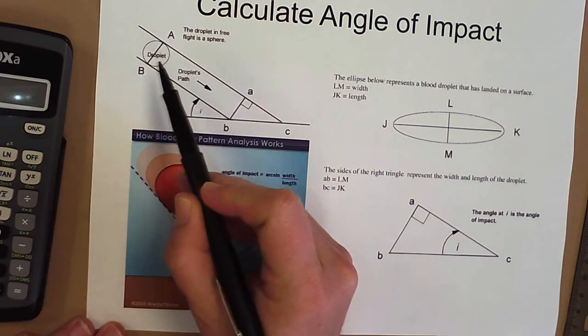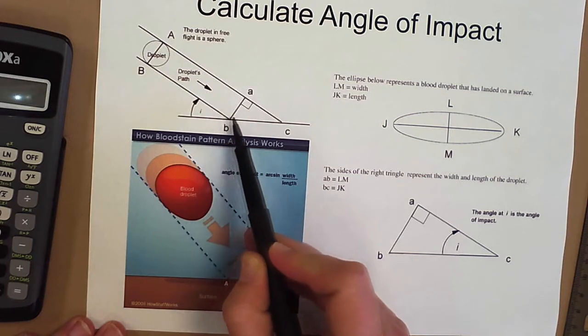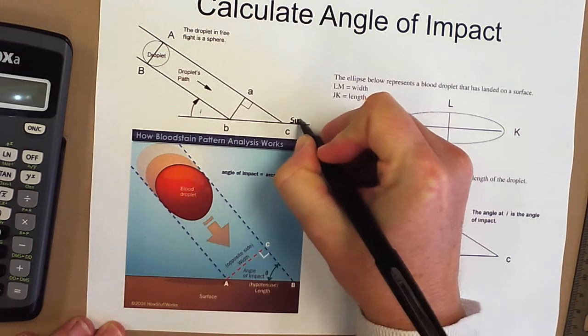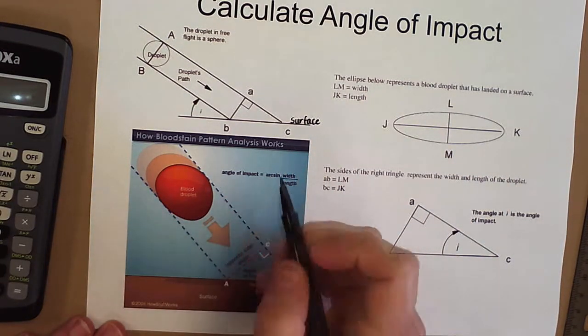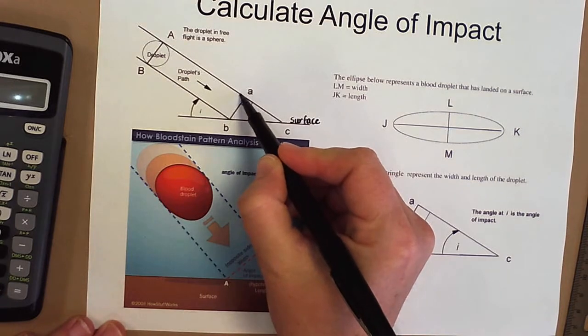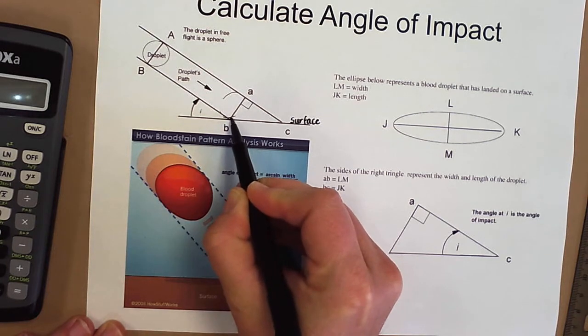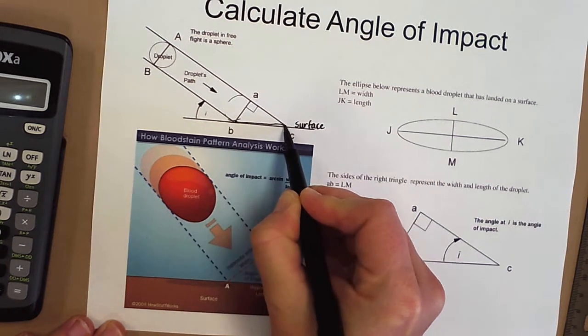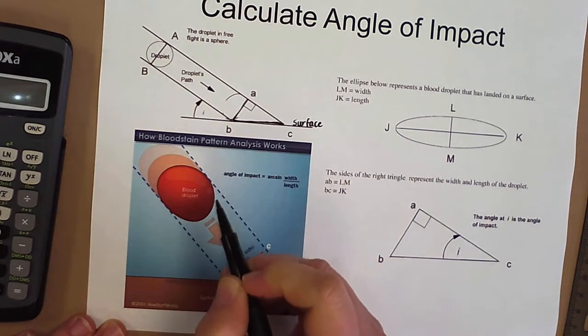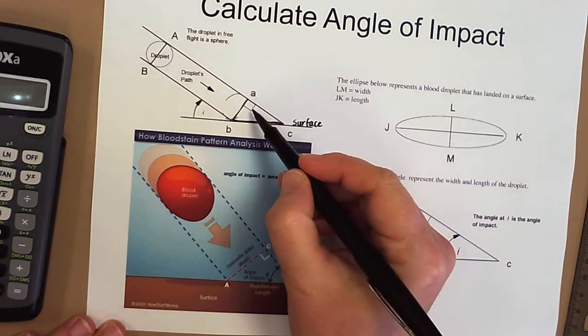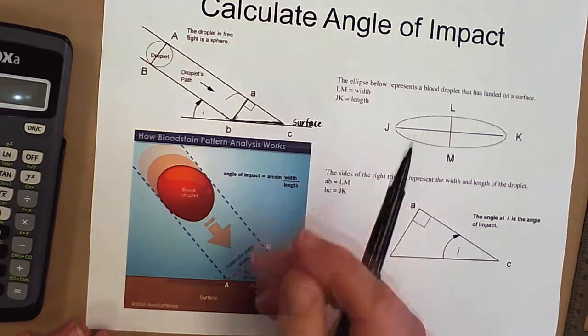If you look here, this is supposed to be the droplet of blood flying through the air, and this down here would be the surface that it's going to hit. It could be any surface—the floor, the wall, it doesn't matter. As this blood droplet is coming in, it's going to hit the surface here at point B and then spread out. This is the width of the blood droplet and this is the length of the blood droplet, and if you notice it forms a right angle. So we have a right triangle, which is why we're able to use the trig functions.